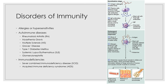Autoimmune diseases include: rheumatoid arthritis, which systematically destroys the joints; myasthenia gravis, which impairs communication between nerves and skeletal muscles; multiple sclerosis, which destroys the myelin sheaths of the brain and spinal cord; Graves' disease, in which the thyroid gland produces excessive thyroxine in response to autoantibodies that mimic TSH; type 1 diabetes, which destroys pancreatic beta cells resulting in deficient insulin production; systemic lupus erythematosus (SLE), a systemic disease occurring mainly in young women affecting the kidneys, heart, lungs, and skin; and glomerulonephritis, a severe impairment of kidney function due to acute inflammation.